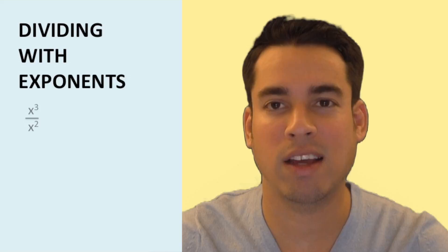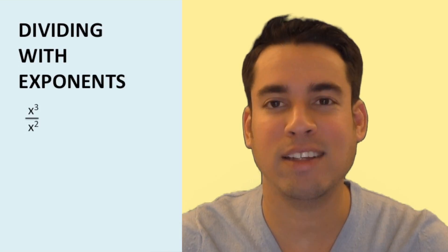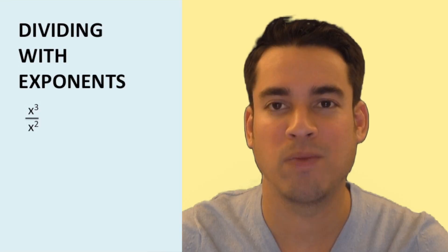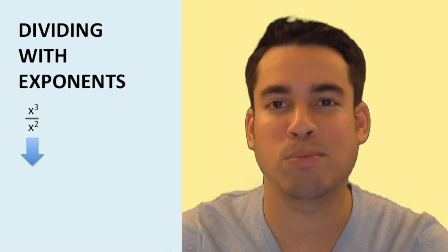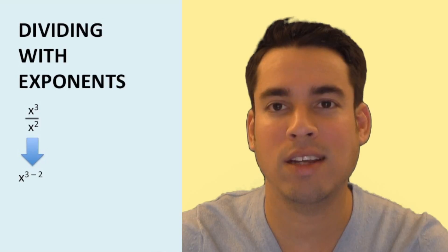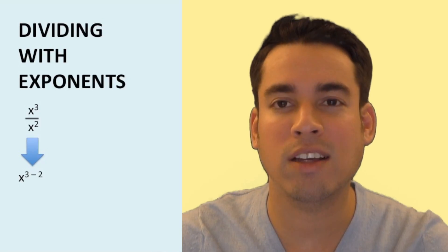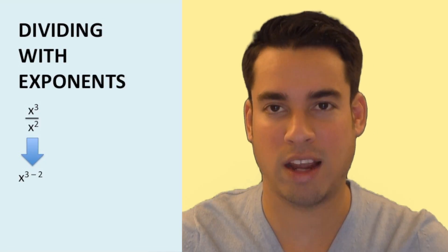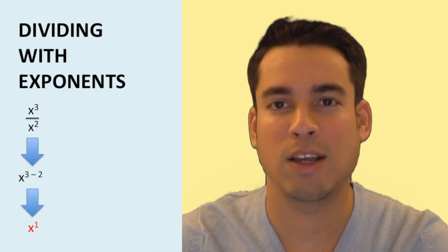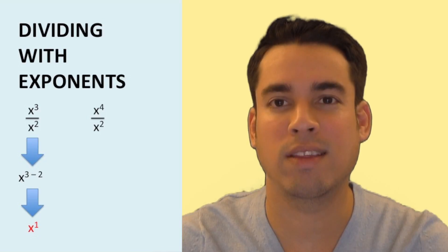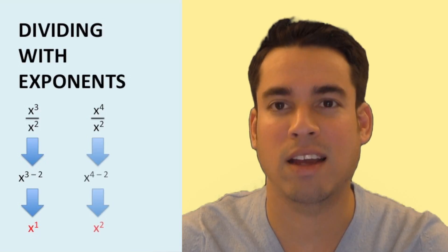When you divide same-base terms, you subtract the exponent in the denominator from the exponent in the numerator. So x cubed over x squared becomes x to the first. Likewise, x to the fourth divided by x squared becomes x squared.